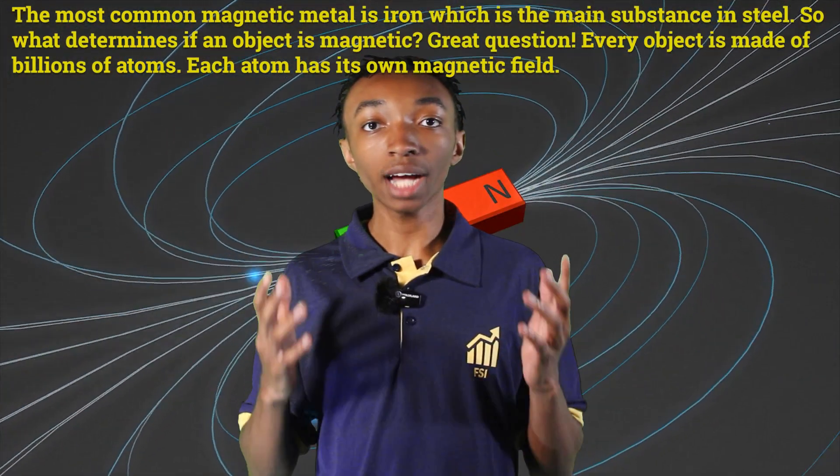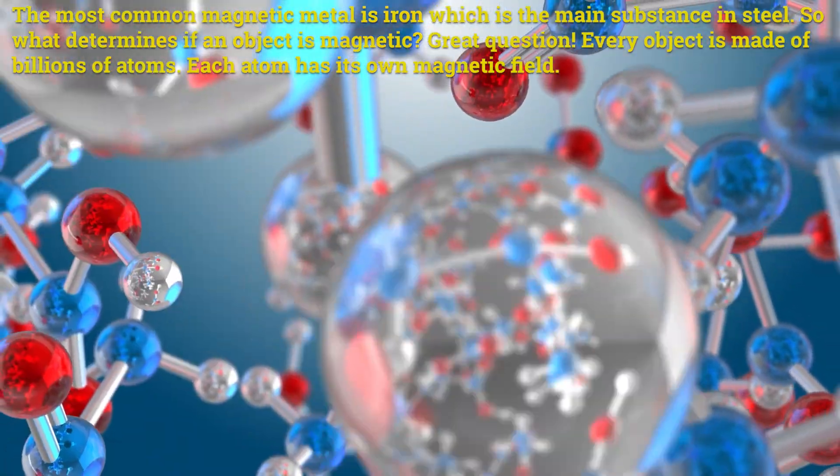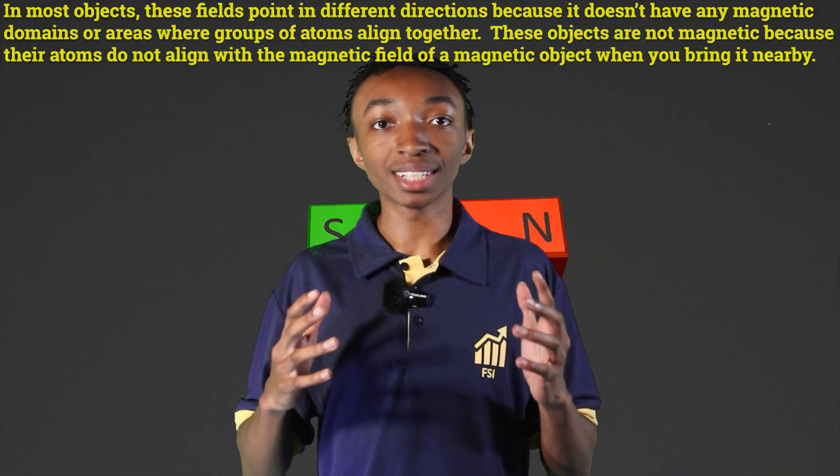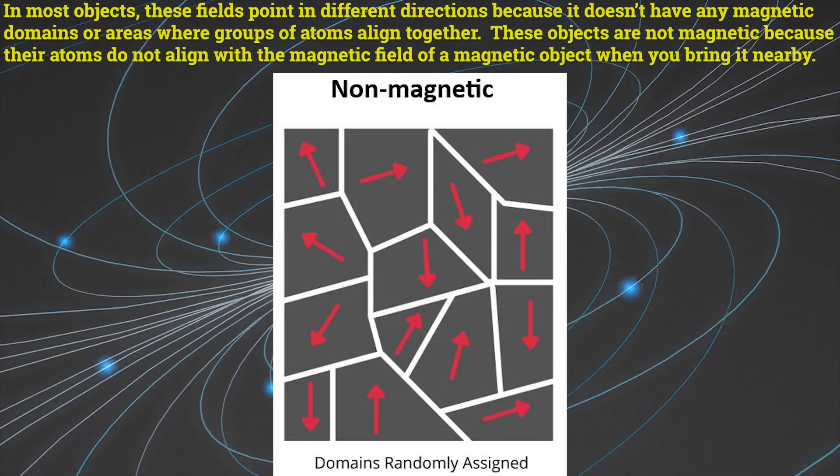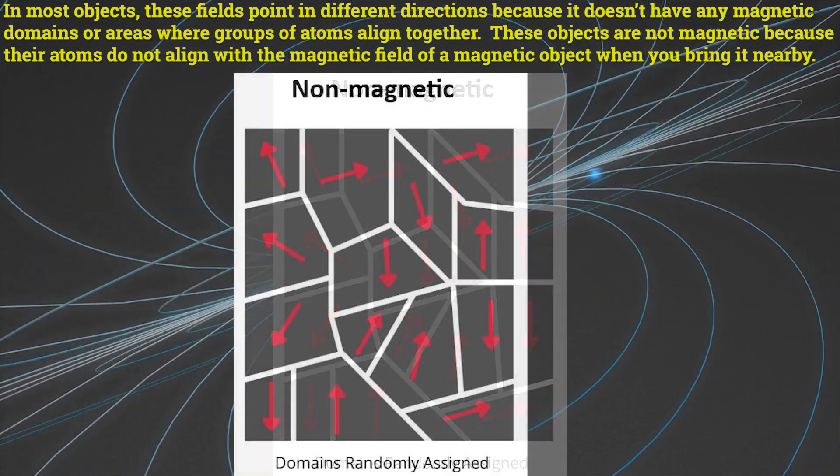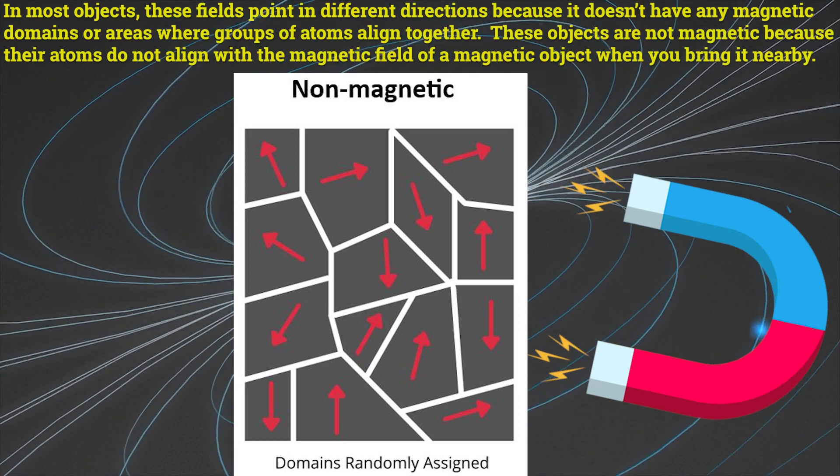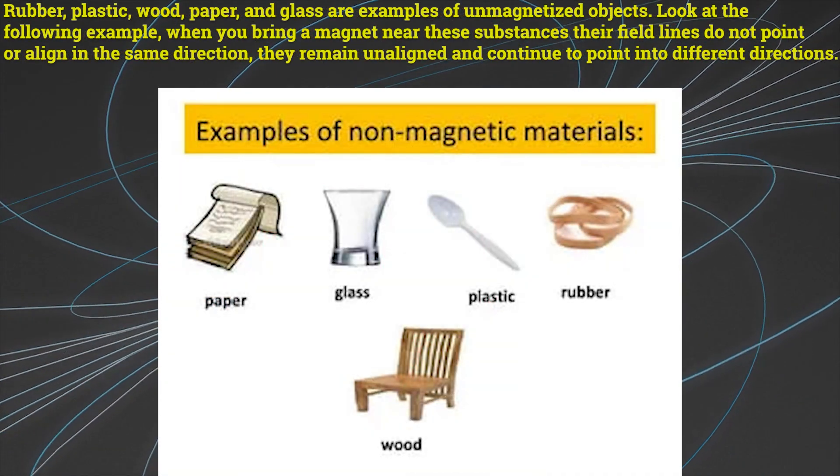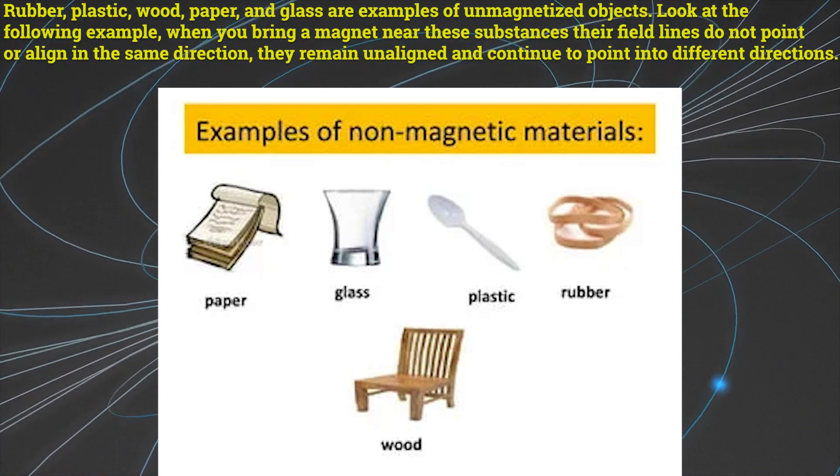So what determines if an object is magnetic? Great question. Every object is made of billions of atoms. Each atom has its own magnetic field. In most objects, these fields point in different directions because it doesn't have any magnetic domains or areas where groups of atoms align together. These objects are not magnetic because their atoms do not align with the magnetic field of a magnetic object when you bring it nearby. Rubber, plastic, wood, paper, and glass are examples of unmagnetized objects.